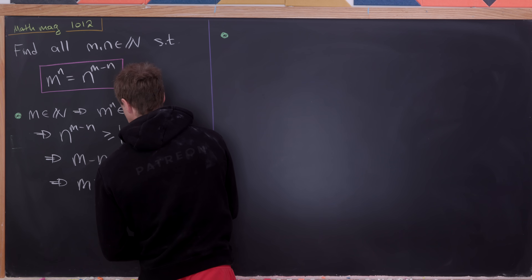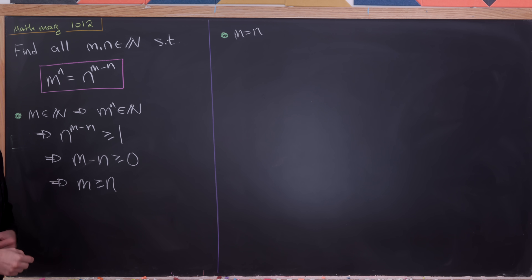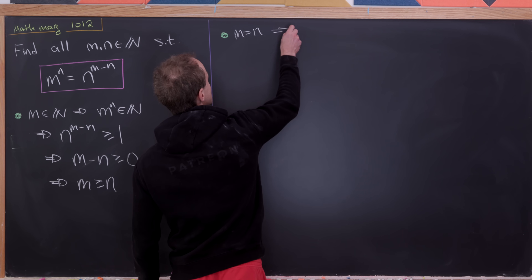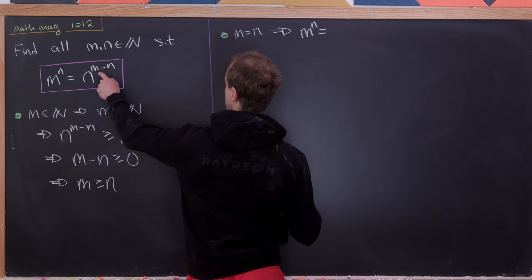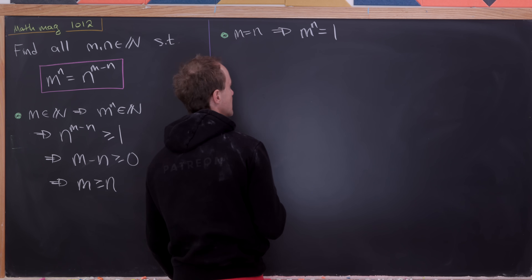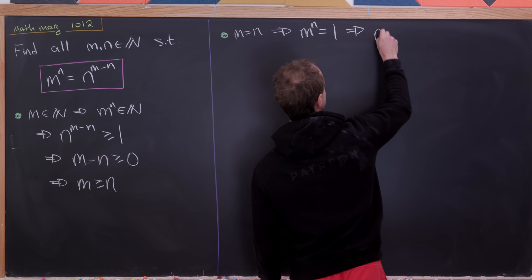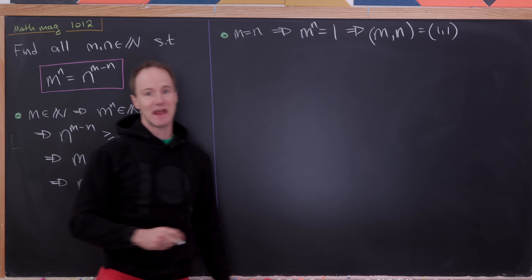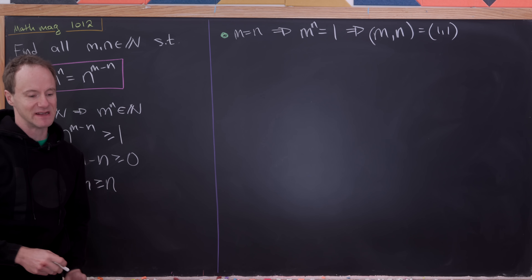The first case is when m is equal to n, and the second case is when m is strictly greater than n. If m is equal to n, plugging that into our original equation immediately gives us m to the nth power equals n to the 0, which is 1. But if m to the n is 1, then m is equal to 1 and n is also equal to 1. So that gives us our solution m equals n equals 1.